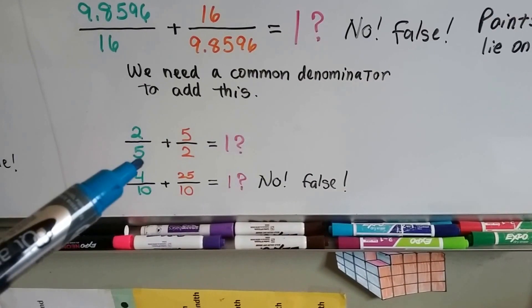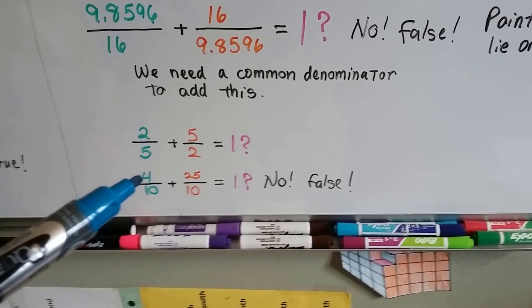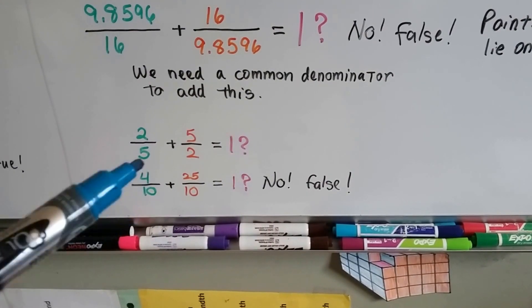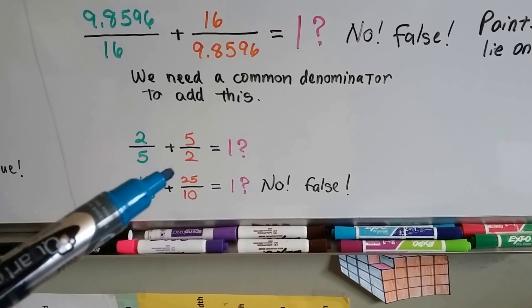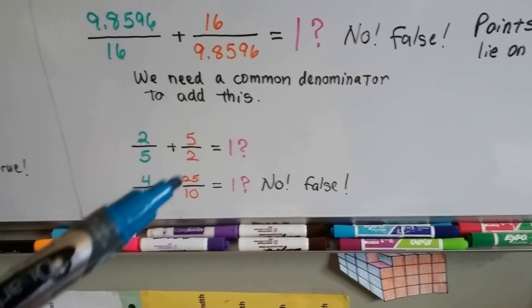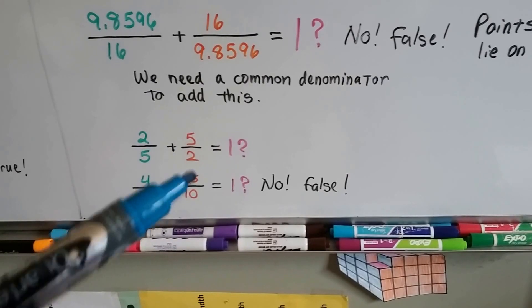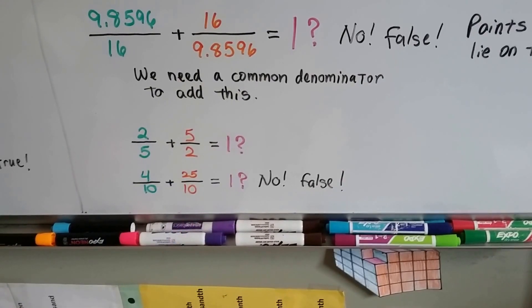5 got multiplied by 2 to be at 10, so we multiply the 2 by 2, so we get 4 tenths. That's an equivalent fraction. And then, for this one, this 2 is multiplied by 5 to get to the 10, so 5 gets multiplied by 5.